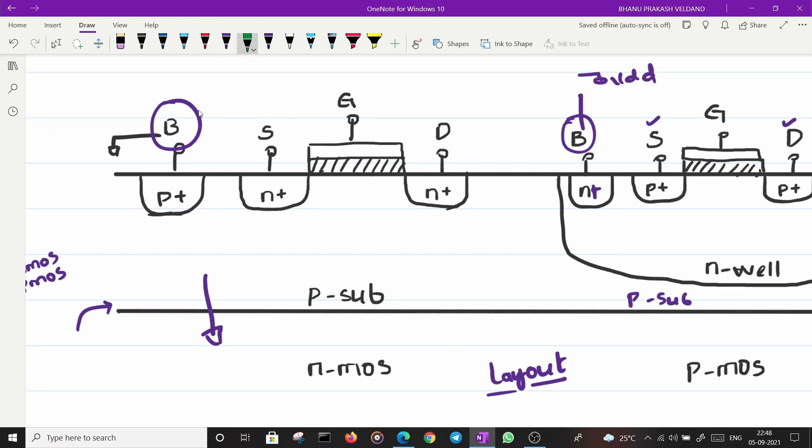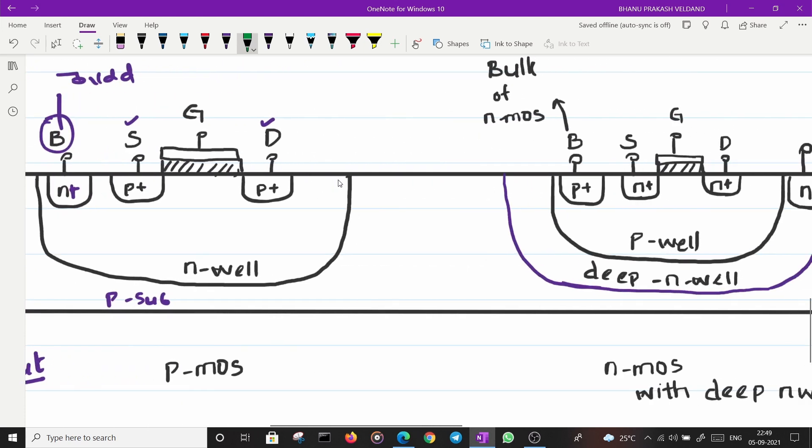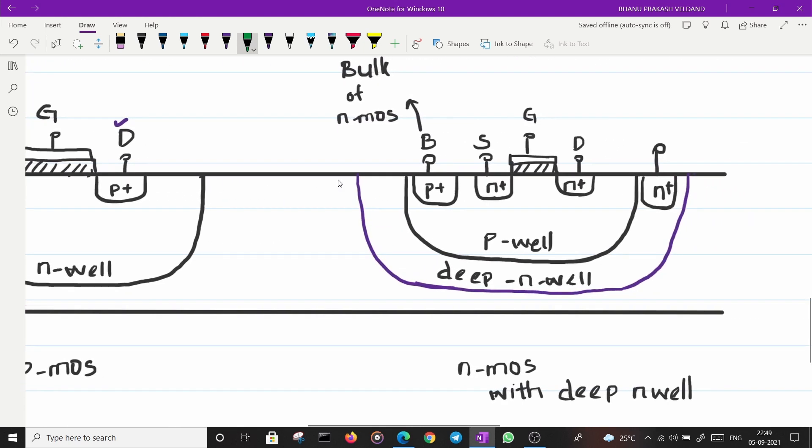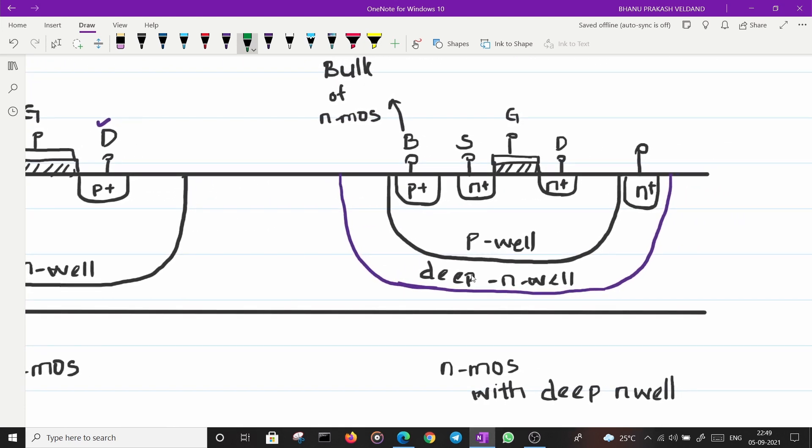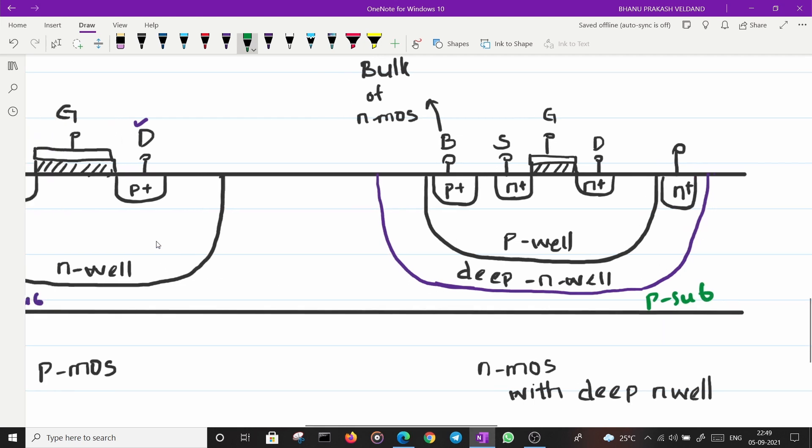Now some people wanted control over the bulk of the NMOS also. They wanted to access this terminal and connect it to other voltage or to a resistor and then to ground. So to do such things what people have done is they have made an N-well. What it means is there is P substrate over which they have made one N-well similar to the one that is there for PMOS. And over which they will again do P regions which makes that P well.